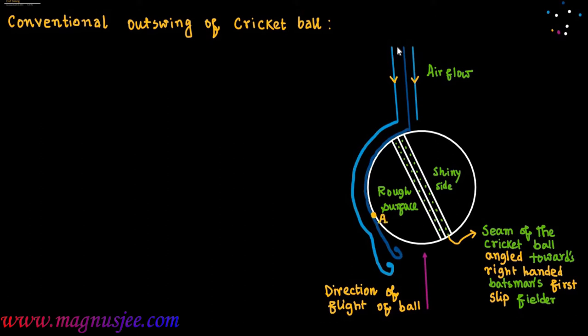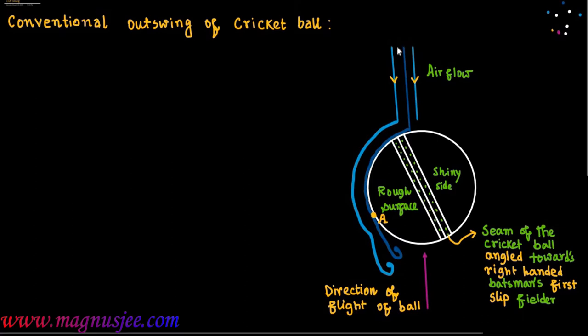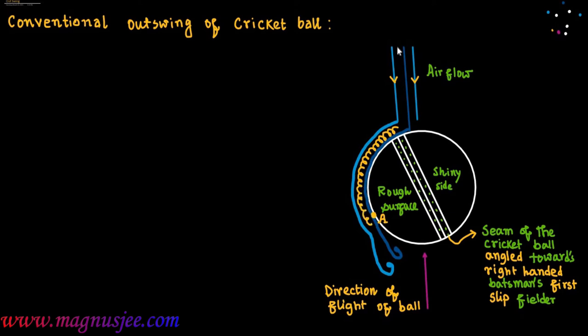Point A is the point of separation of the boundary layer from the rough surface of the cricket ball. The boundary layer on the seam side — that is, the boundary layer touching the rough surface — is in turbulent state, with irregular flow of air. This is what turbulent flow means: the turbulent flow of the boundary layer touching the rough surface or seam side of the cricket ball.